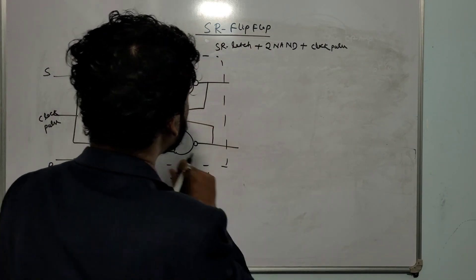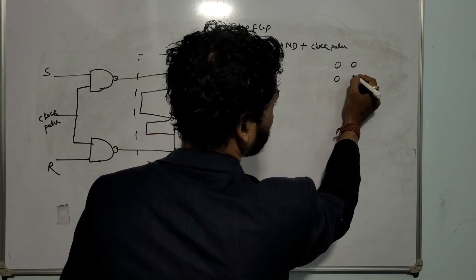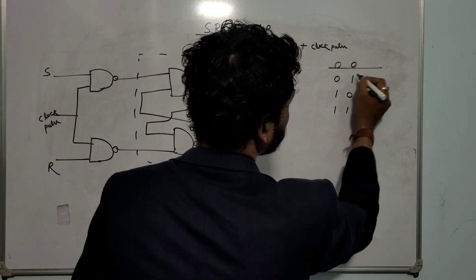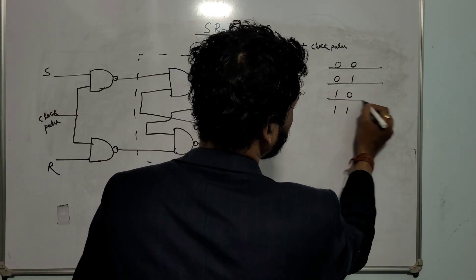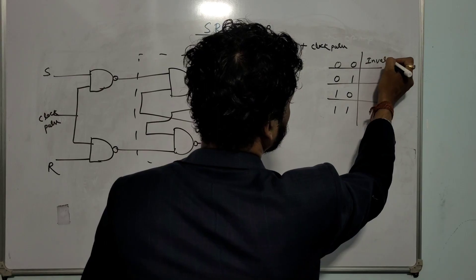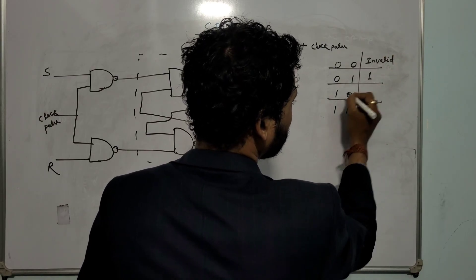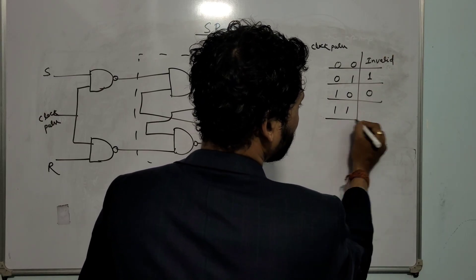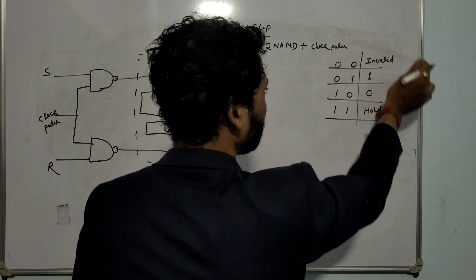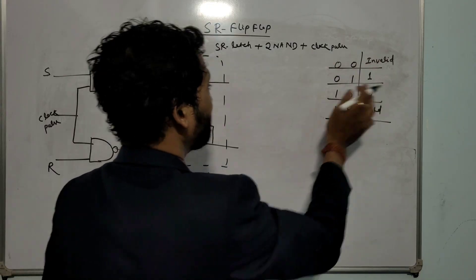Let me write the output of SR latch first. In SR latch: for input 00, output is invalid; for input 01, output is 1; for input 10, output is 0; for input 11, output is hold state. Already I have explained this in the last video. This is the output of SR latch.